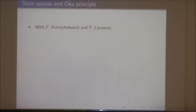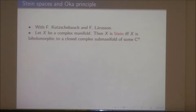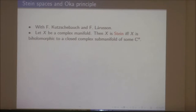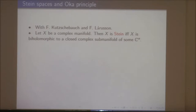I need to tell you a little bit about Stein manifolds and the Oka principle. Let X be a complex manifold. Then X is Stein if and only if X is biholomorphic to a closed complex submanifold of some C^n. That's a quick and dirty definition — that's what a Stein manifold is.